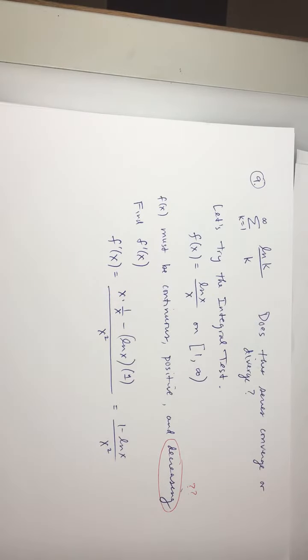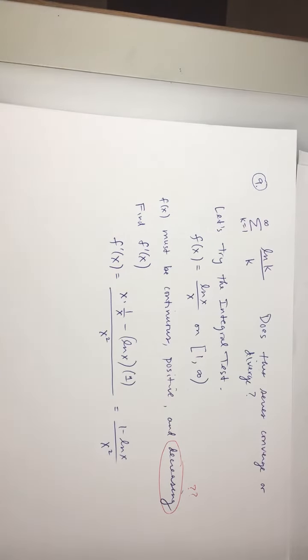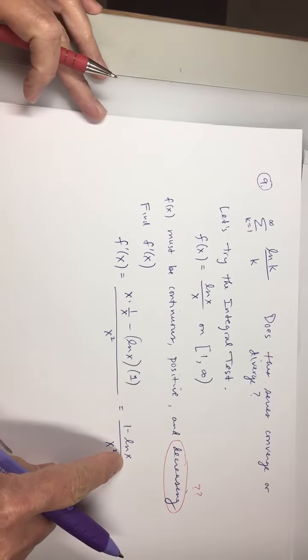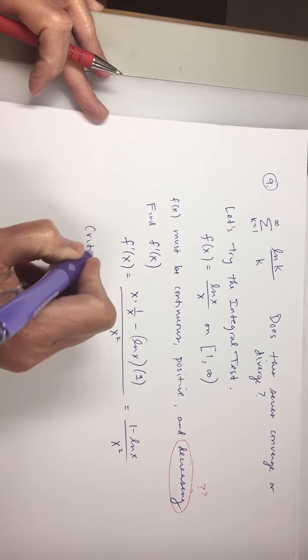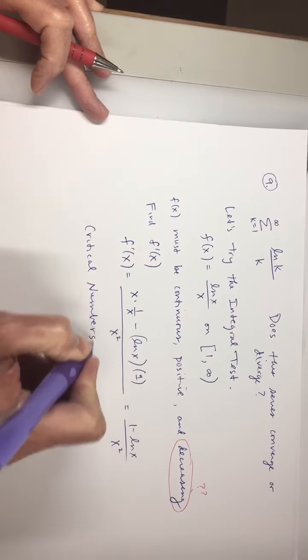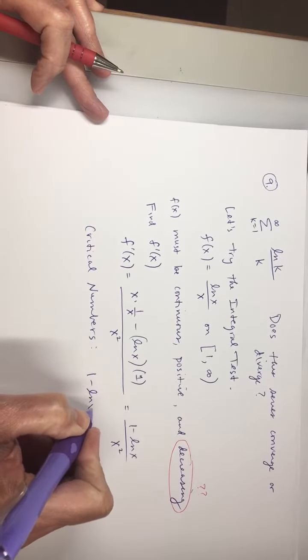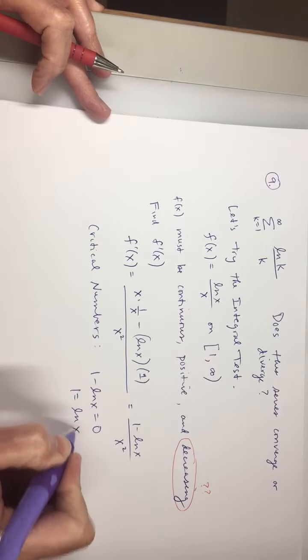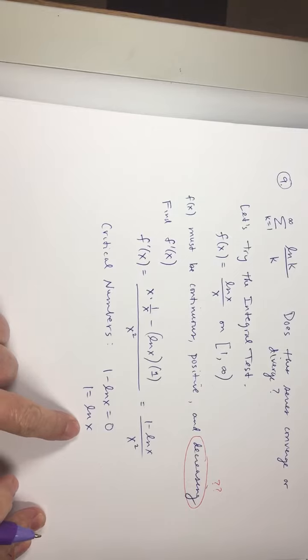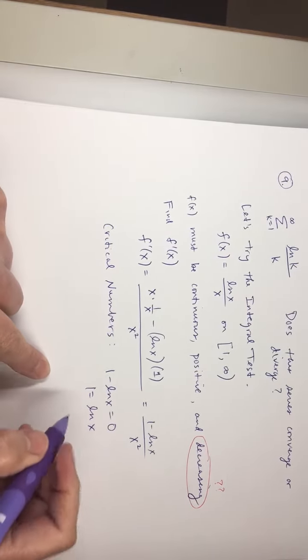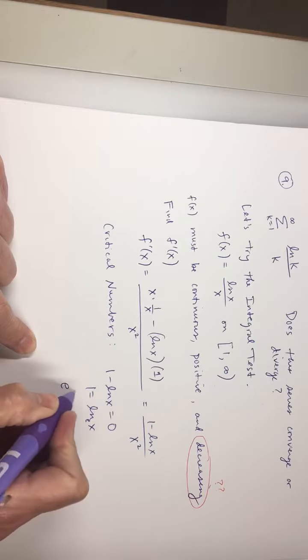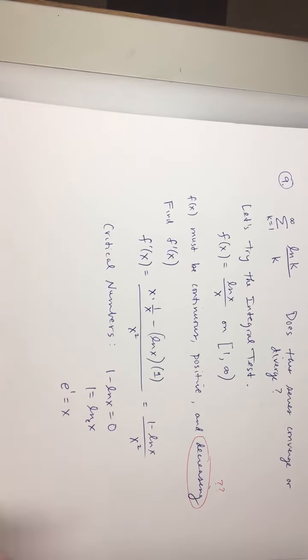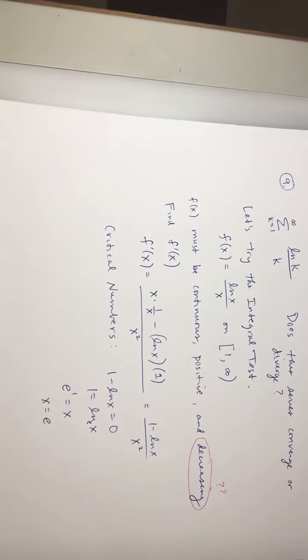So this reduces to 1 minus ln(x) over x squared. Critical numbers? The denominator is 0 at 0, but that's not even on the interval we're looking at. So we're okay with that. To get critical numbers, I'm going to put the numerator equal to 0. 1 minus ln(x) is 0. So 1 equals the natural log of x. Natural log of what equals 1? E. And if you're not sure how to solve this, this is log base e. E to the first power, that's the exponent, equals x. There it is, x equals e. That's a critical number.